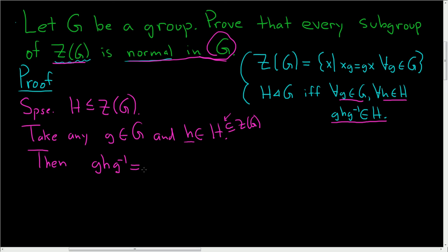So this is gg inverse h. And this step here is because H is in capital H, which is in the center of G. So h is actually in the center of G, so it commutes with every element of G. In particular, it commutes with this little guy here, g inverse.